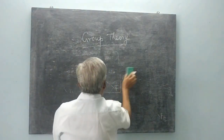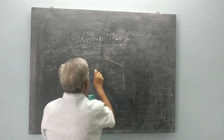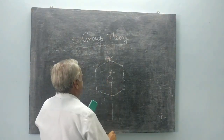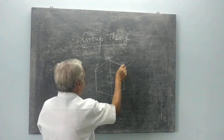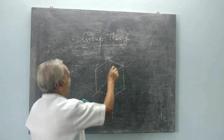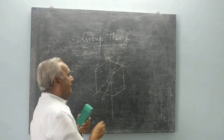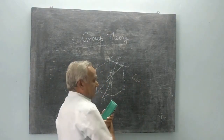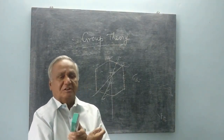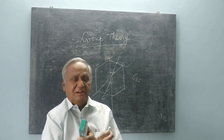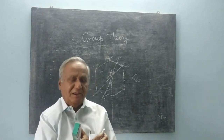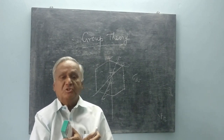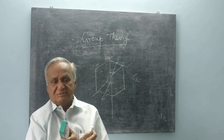Let me consider benzene as a molecule. Benzene has a central axis. A plane that bisects the angle between two C2 axes I call sigma-D, a dihedral plane. So there are three types of planes of symmetry: the vertical plane containing the major axis, the horizontal plane which bisects the major axis, and the dihedral plane which bisects the angle between two C2 axes and produces two identical halves.